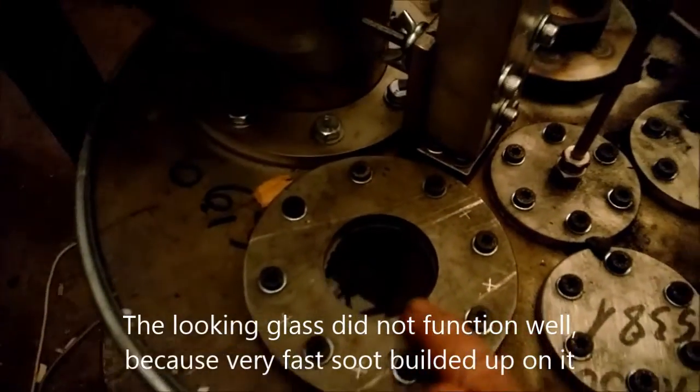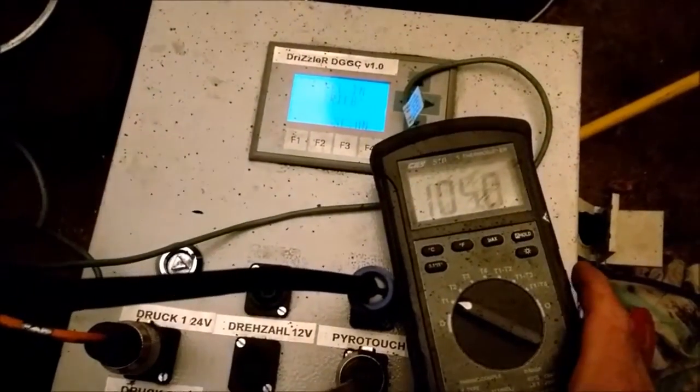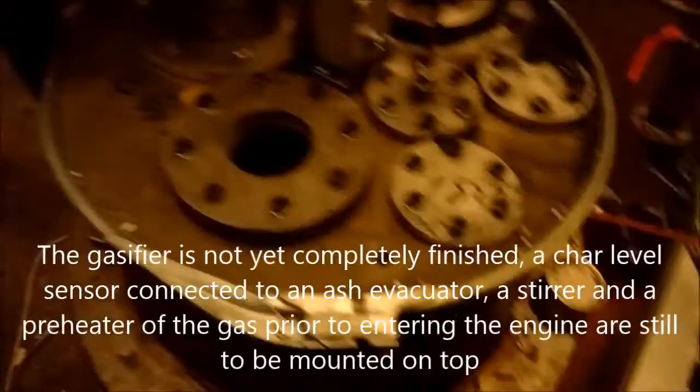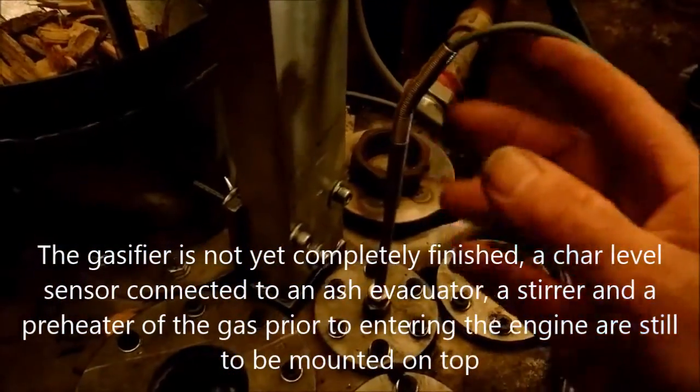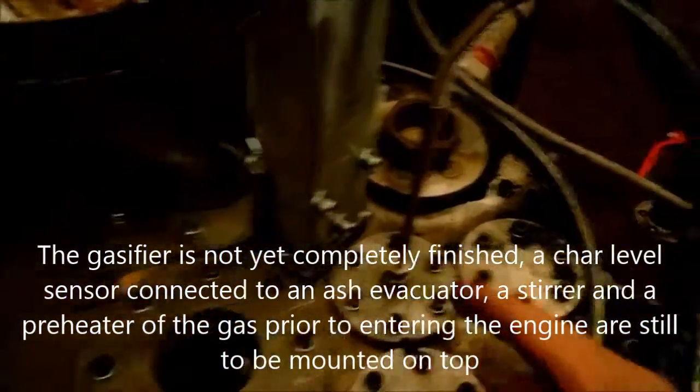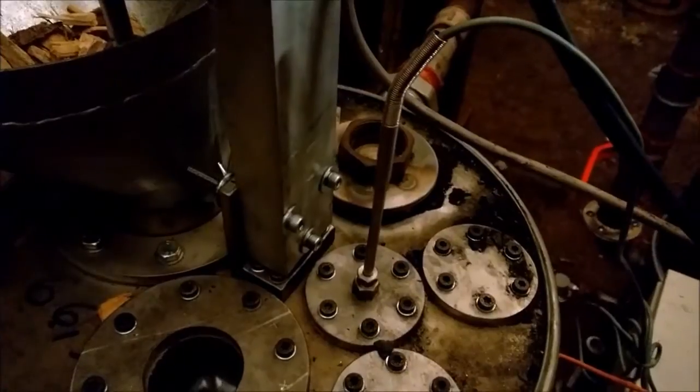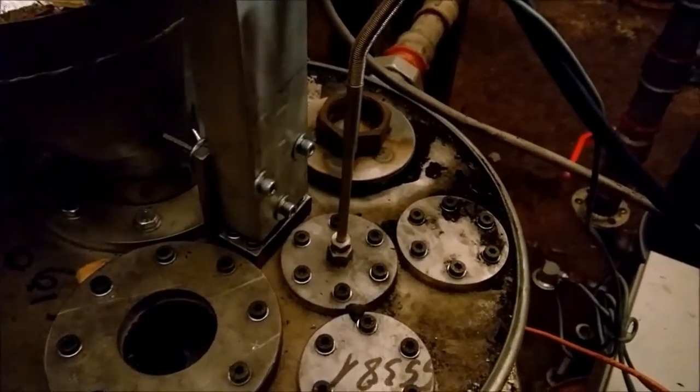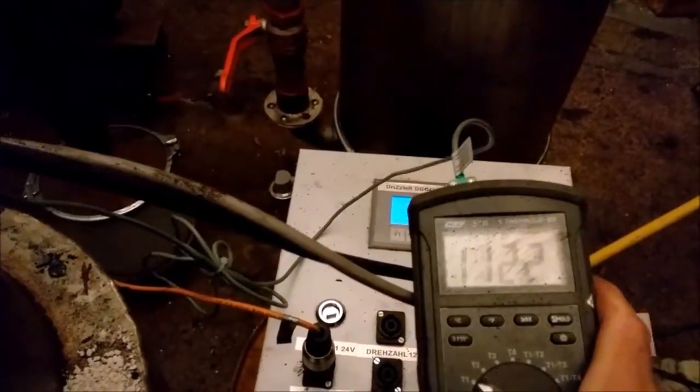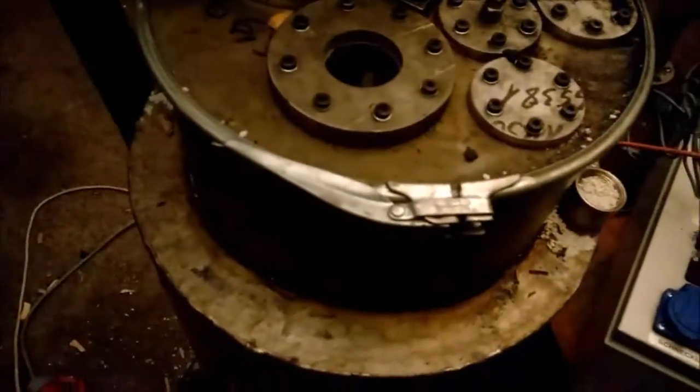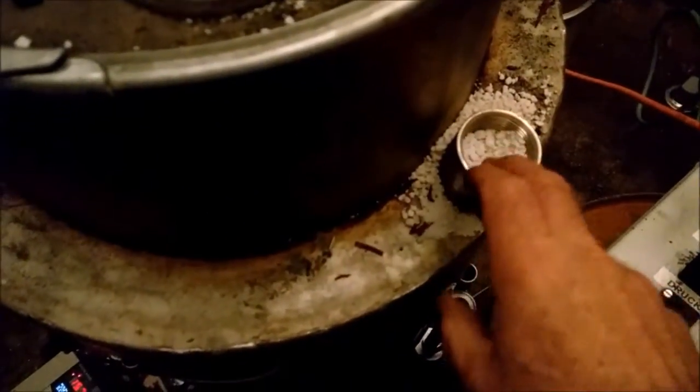There's not much to see because the gasifier is just started up. We have inside the gasifier not even a glowing bed, we have only 100 degrees. I have this thermal couple which goes all the way until the lowest level of the drizzle tube and this thermometer is now reading 112 degrees, so the gasifier is freshly started up and is still cold.